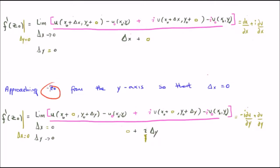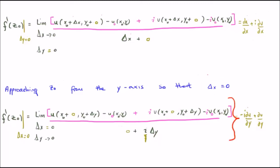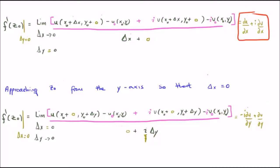Now we approach z0 from the imaginary direction by setting delta x equal to zero. Substituting into our derivative, we get this expression. Looking carefully, we have the partial derivative: negative iota del u/del y plus del v/del y. Note that I've moved iota from the denominator to the numerator by multiplying by iota over iota, which equals one. So when we fix the real component and vary the imaginary, we get these partial derivatives.